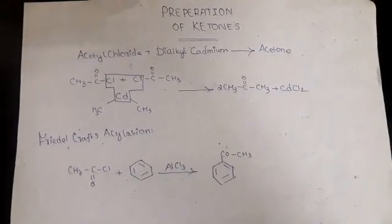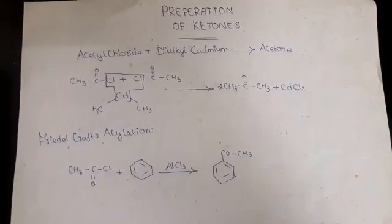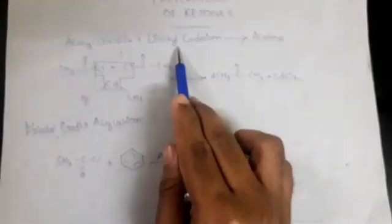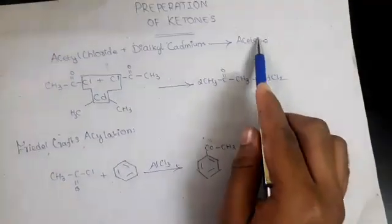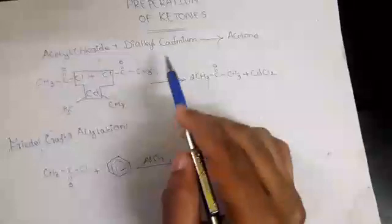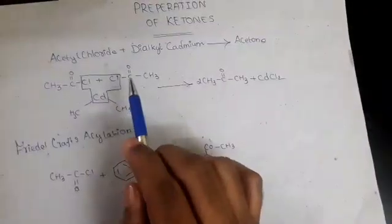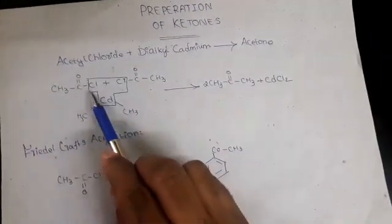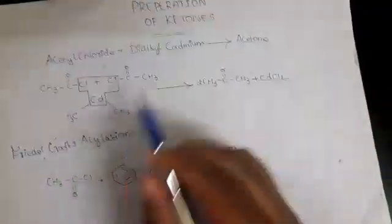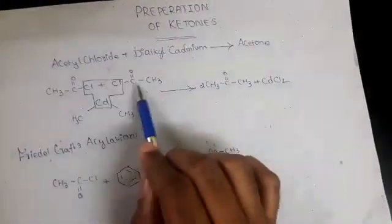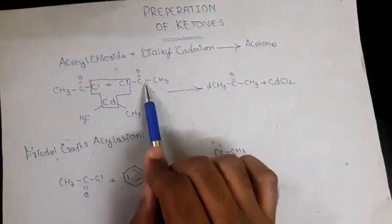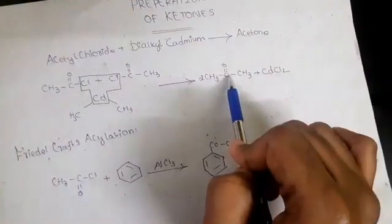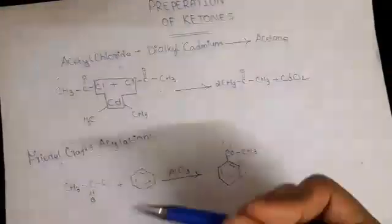Hello students, welcome. We can see the preparation of ketones. The first preparation: acetyl chloride is treated with dialkyl cadmium to produce acetone. This reaction is carried out when two moles of acetyl chloride react with one mole of dialkyl cadmium to give two moles of acetone.